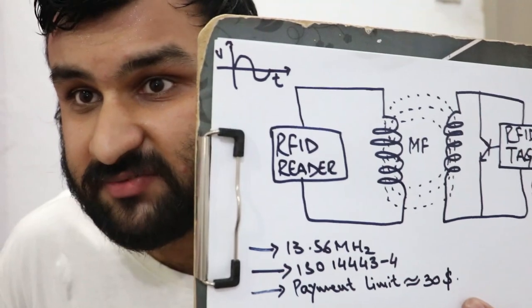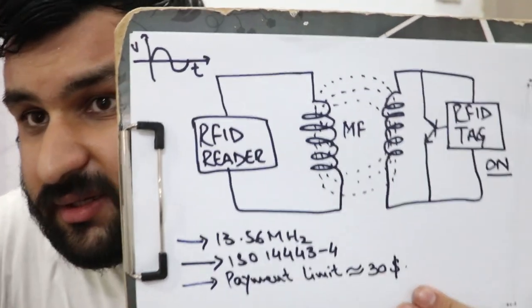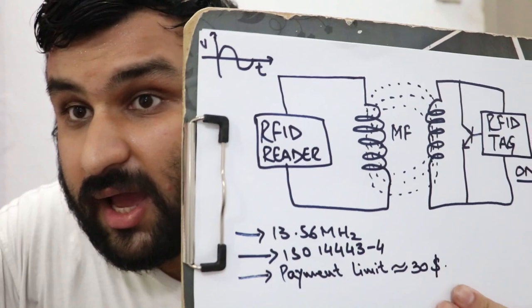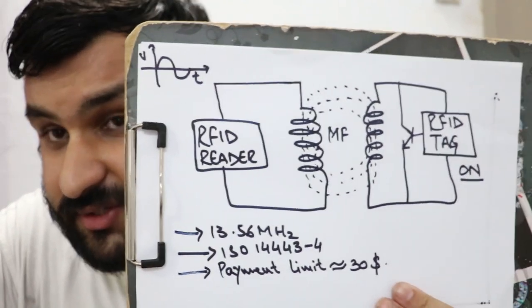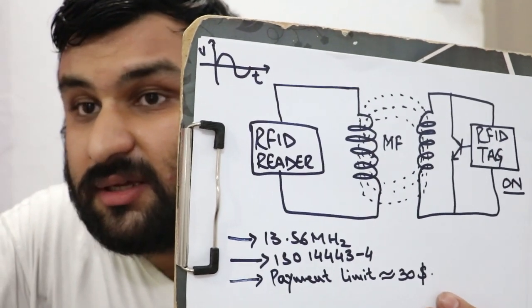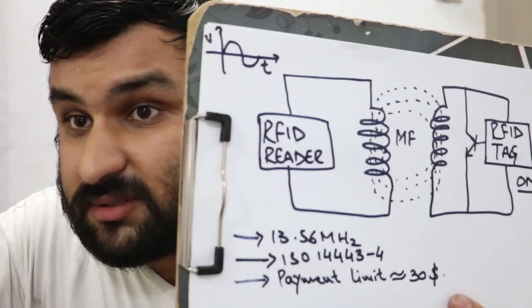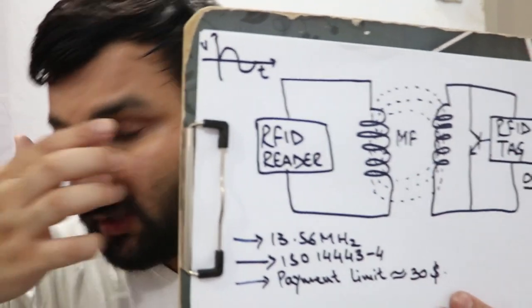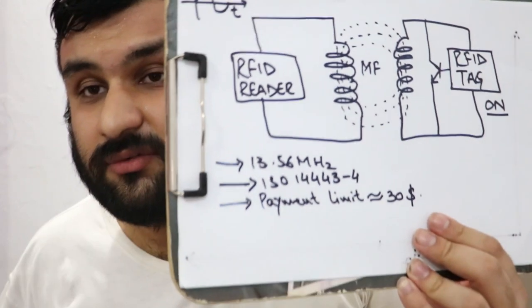The semi-passive tag is the combination of the active and passive RFID readers. It has a better range than the passive tag but worse range than the active tag.